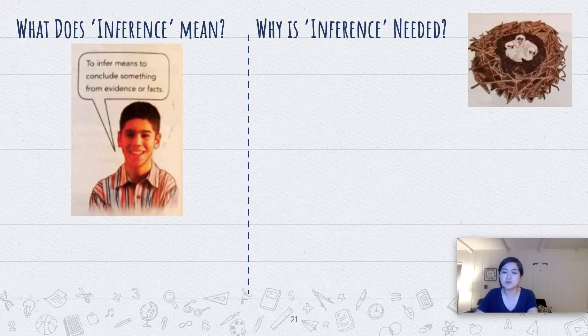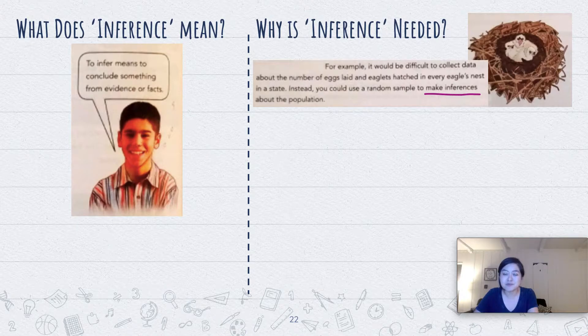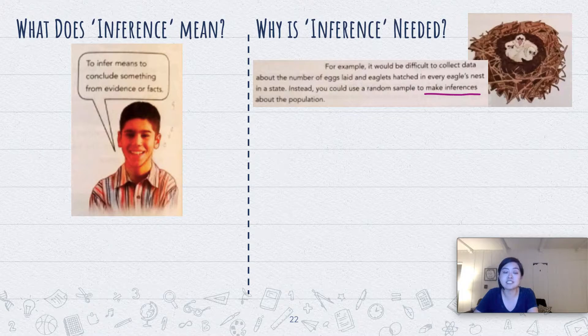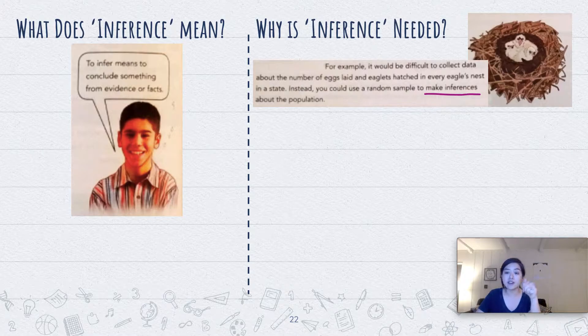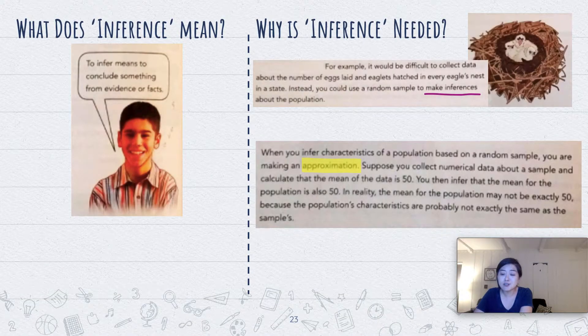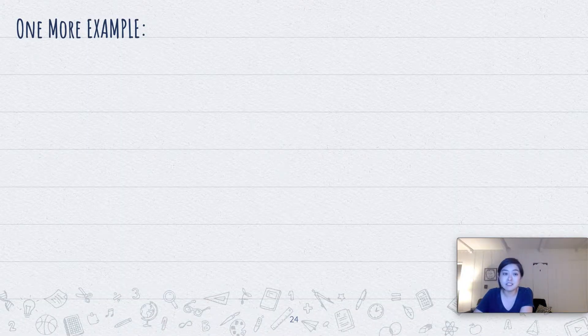Let's look at this example. You guys know what those are? Well, those are eaglets. It might be difficult to collect data about the number of eggs laid and eaglets hatched in every eagle's nest in a state. Instead, you could use a random sample to make inferences about the population, and this is what we were doing last week when we were looking at random, stratified, and systematic. We're making inferences about the population. Now, making those inferences mean it's an approximation, not an exact about the population.